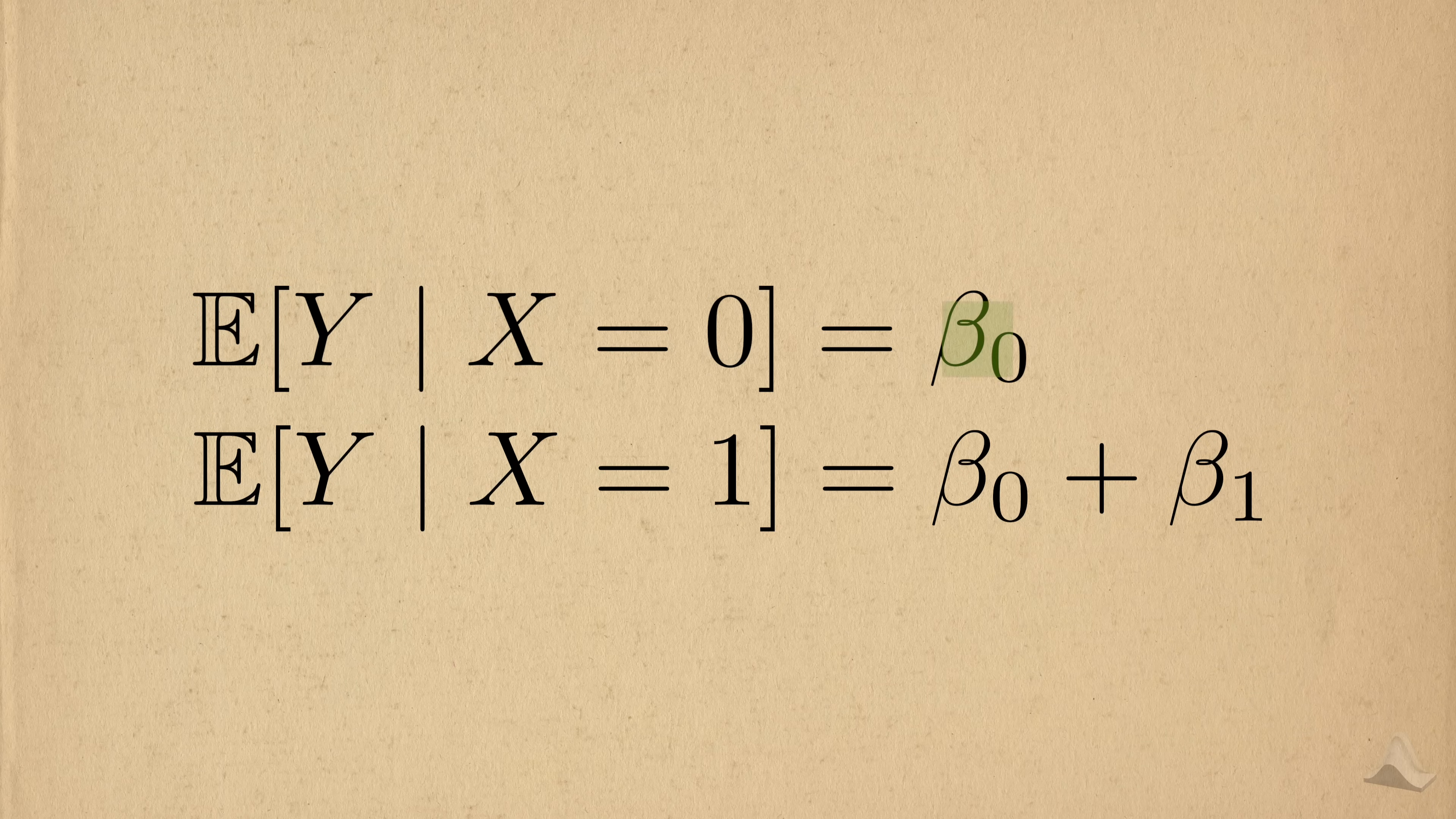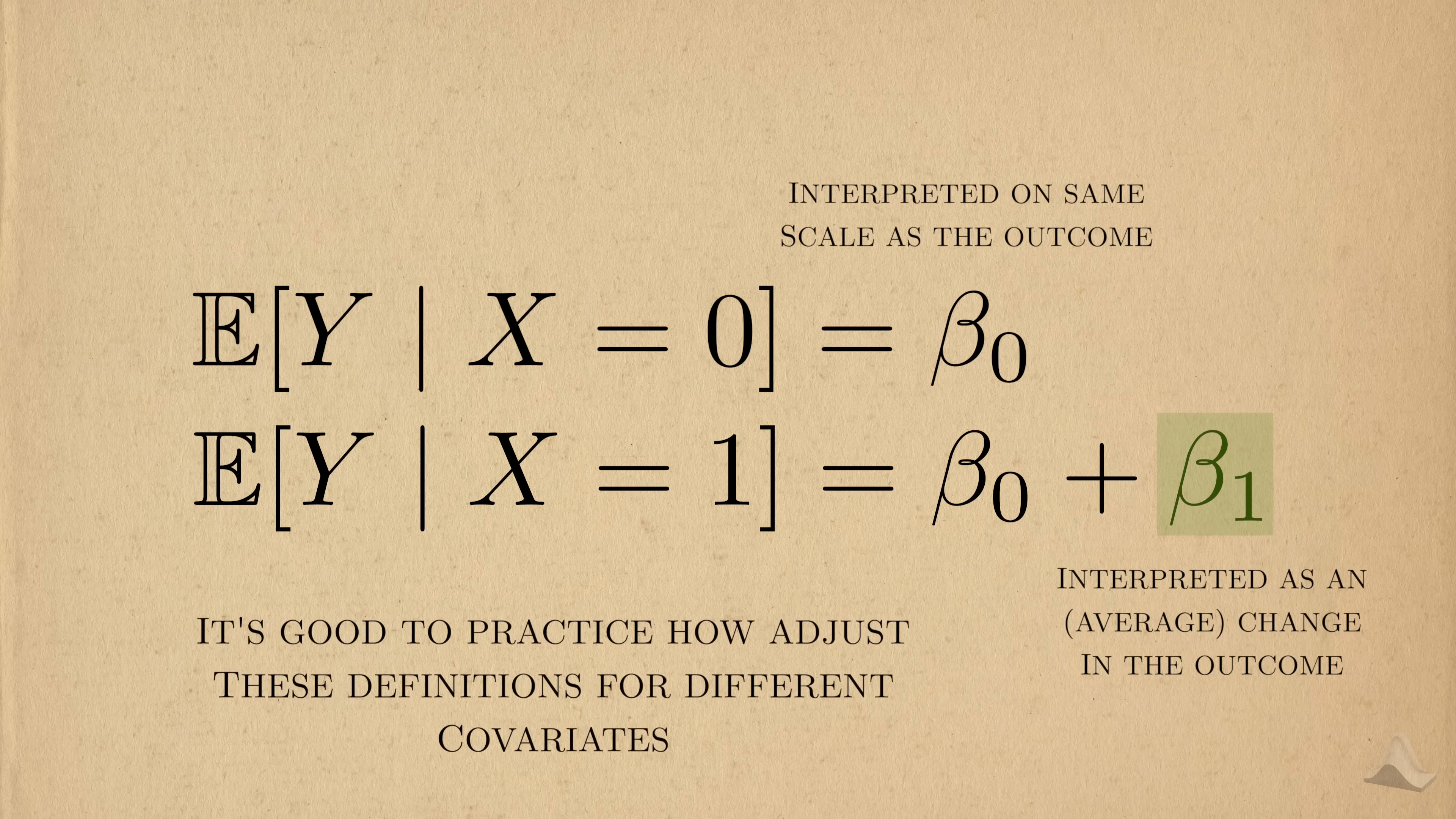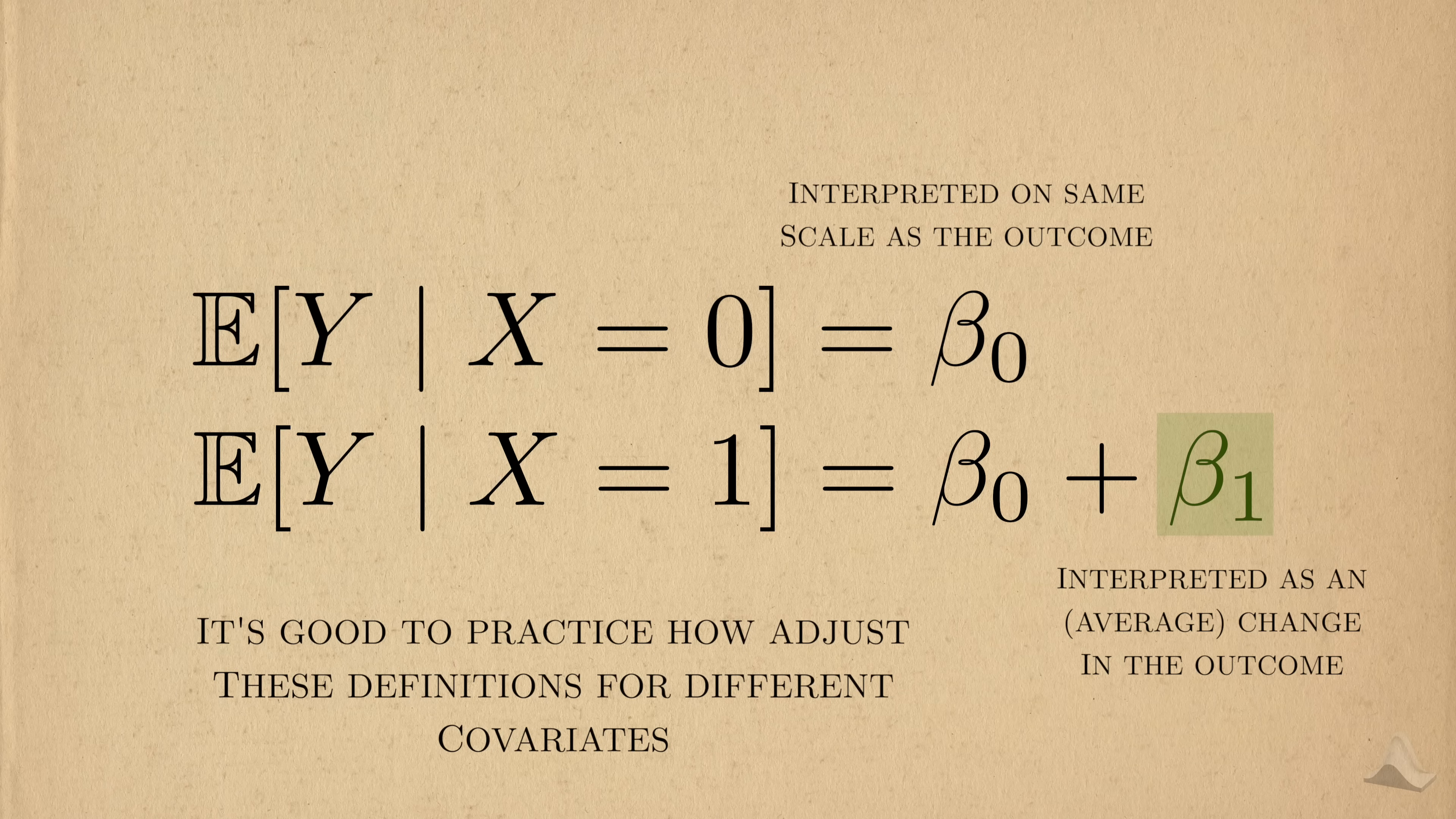This also means that beta 0, which is interpreted on the same scale as the outcome, is different from beta 1, which is interpreted as a change in the outcome. These are purely mathematical terms, so it's good to know how to translate these according to the problem you're working with.